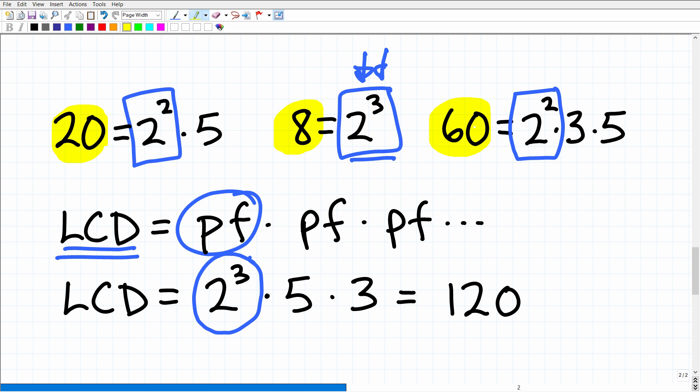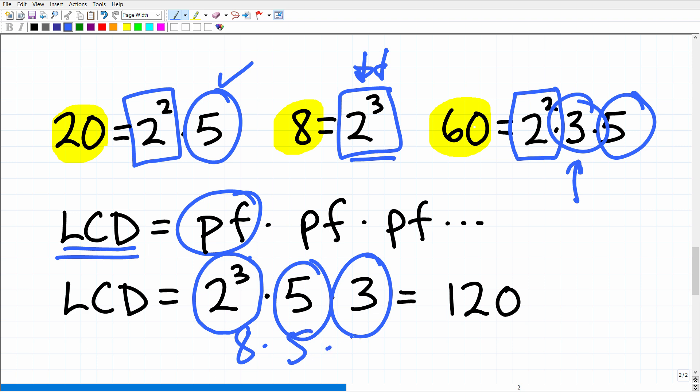All right, so now, looking at my other prime factors, what do I have? Well, I have a 5. I also have a 5 right there. So do I have to have two 5s? No, just one 5, just representing one of the unique prime factors into my LCD. So here's a 5, here's a 5. We just have to have one represented. So there is a 5, and I'm scanning through here. I'm like, oh, I have a 3. I need to have that represented as well. So now I have 2 cubed times 5 times 3. 2 cubed is 8. 8 times 5 times 3. 40 times 3 is 120. Okay, so this is how you find the LCD.